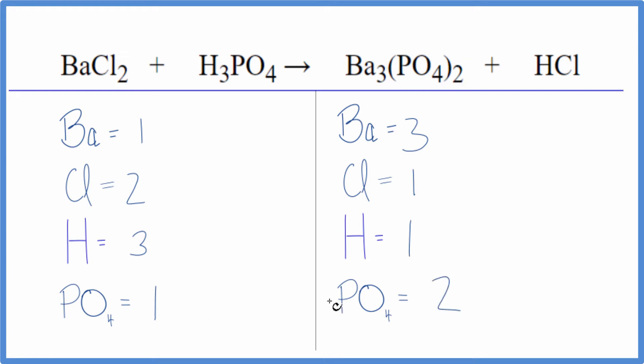So that makes it a lot easier to understand what we need to do. Let's put a 3 in front of BaCl2. One times three balances the barium atoms. Two times three gives us six chlorines.